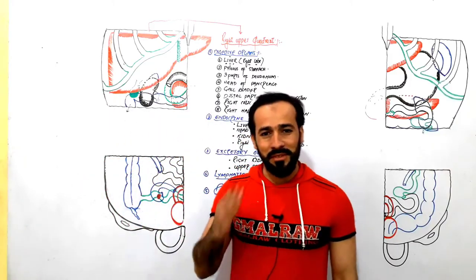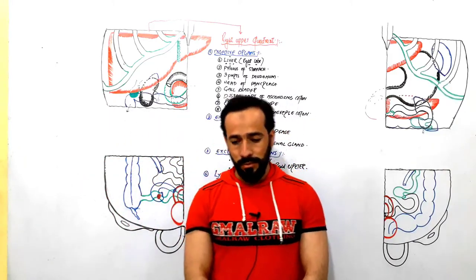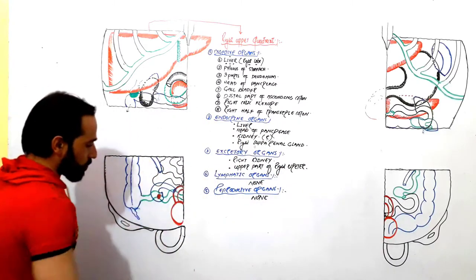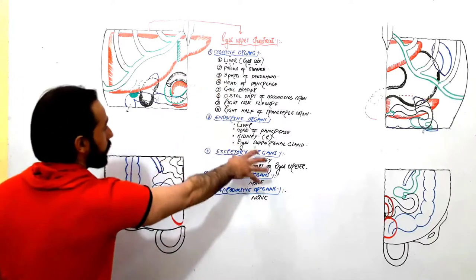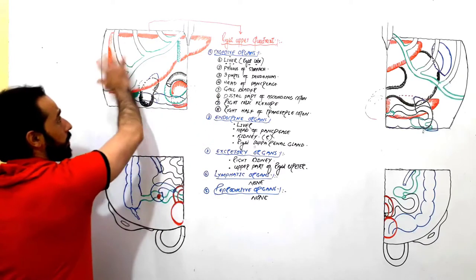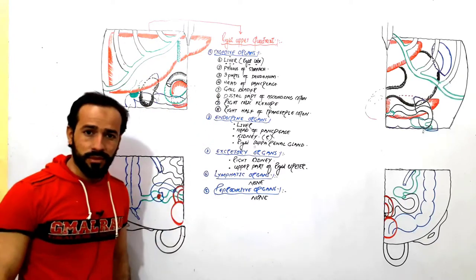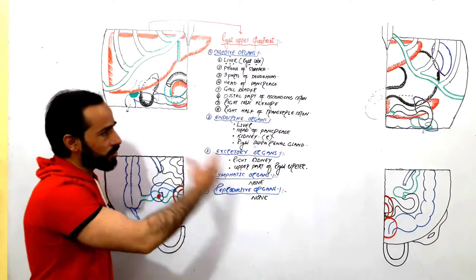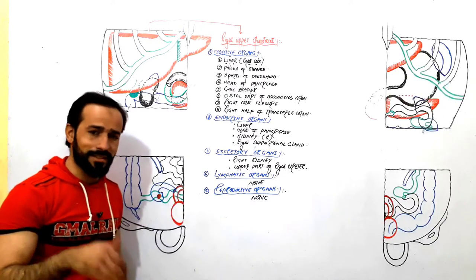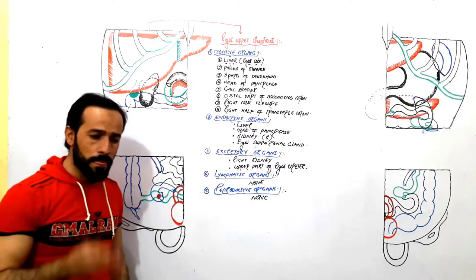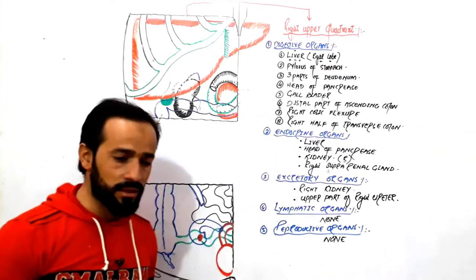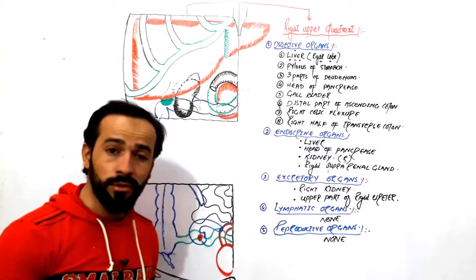Hello dear students and friends, assalamualaikum and welcome back. Let's discuss about the organs present in the right lower quadrant of the abdominal cavity. In the previous lecture I discussed about the organs found in the right upper quadrant. All the links to those lectures are in the description of each video — click and watch those to get clear knowledge of all the abdominal viscera, abdominal regions, and abdominal quadrants.